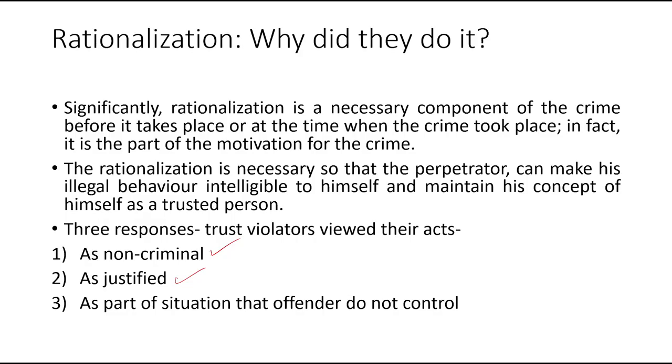With that, we have tried to understand why trust violators commit fraud and what are the defenses they take. Today we have talked about two things: how does one learn criminal behavior — for that refer to the differential association theory; and why do criminals do a particular act and what are the motivations for them to violate the position of trust — for that refer to the fraud triangle theory. This theory to date has been used in detecting fraud. Thank you.